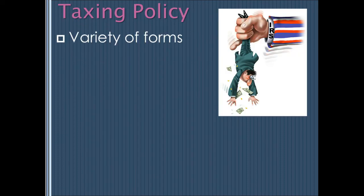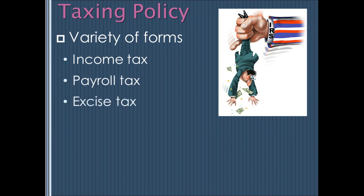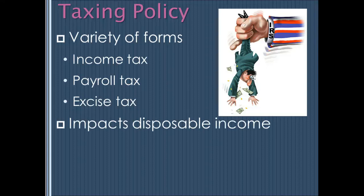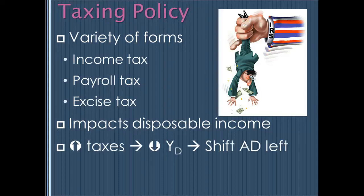When it comes to tax policy, we're talking about all sorts of taxes: income taxes, payroll taxes, excise taxes, and others. Every tax takes money from the taxpayer and transfers it to the government, which reduces disposable income. If taxes are increased, it diminishes individuals' disposable income so they can't spend as much — consumption decreases and aggregate demand shifts left. The opposite is true if we cut taxes: disposable income rises and aggregate demand shifts to the right.